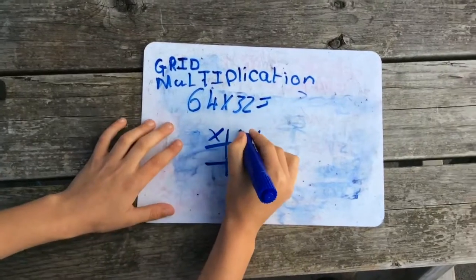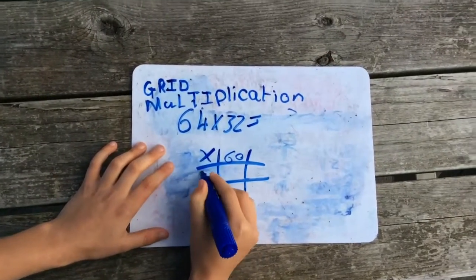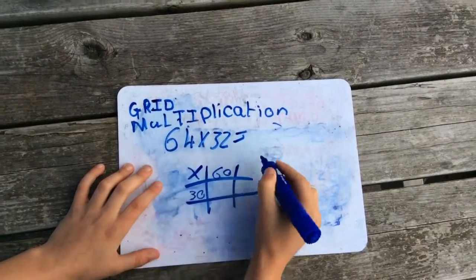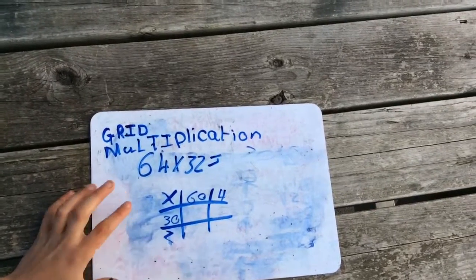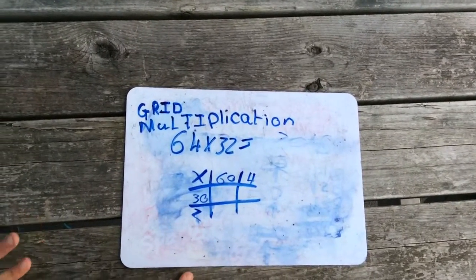So you've got your 60, you want to put that there. You've got 30, put that there. You've got your 4, there, 2, there. So that's all you need to start off.